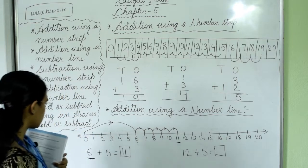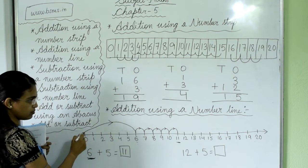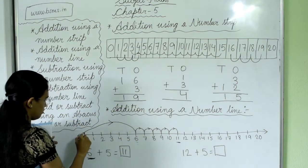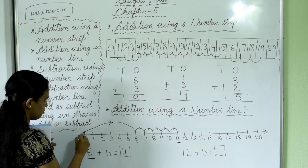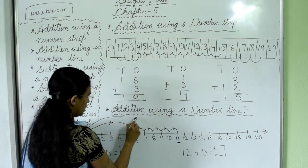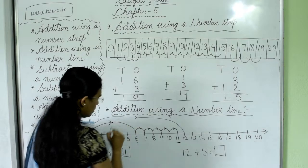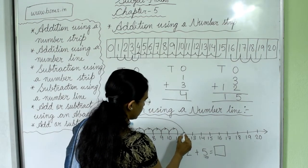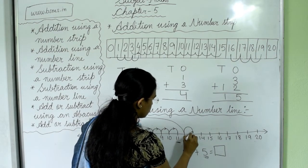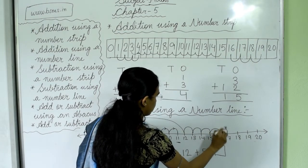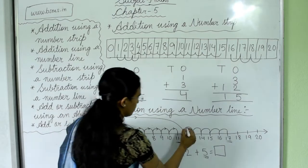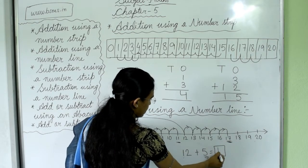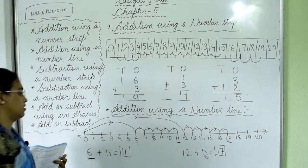Next question is 12 plus 5. Again, we start from 0 and take a long jump up to 12. Then we go forward 5 steps from 12: 1, 2, 3, 4, 5. We have reached number 17. So 12 plus 5 equals 17.